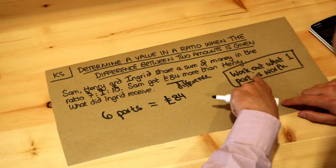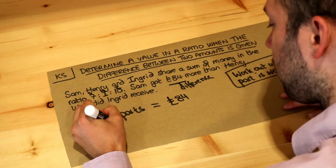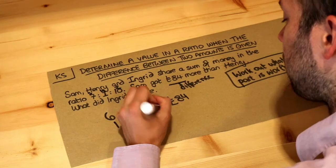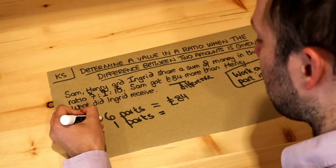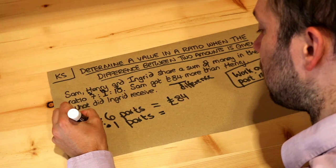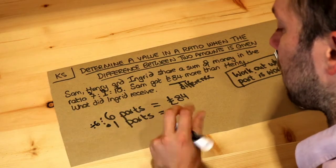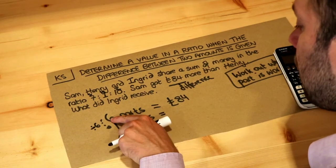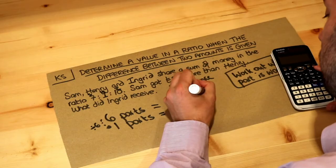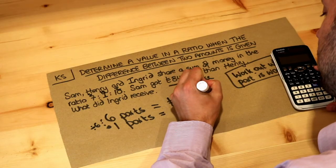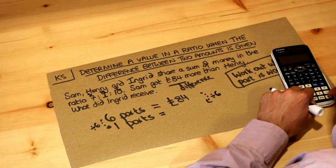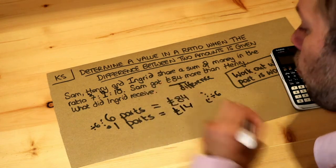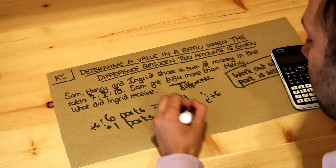As per my advice, work out what one part is worth. If 6 parts is worth £84, then to get one part we just need to divide by 6, because 1 is 6 times smaller than 6. 84 divided by 6 is 14. So one part is worth £14.